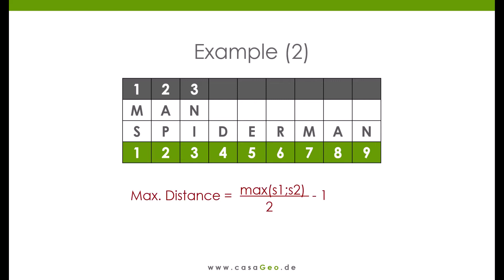The maximum distance is calculated by dividing the longer of the two words by 2 minus 1. Let's apply the formula to the word pair, man and Spider-Man. First, we calculate the maximum allowed distance, 3 decimal points 5. The distance between two identical letters may therefore be a maximum of three characters so that they fit together.